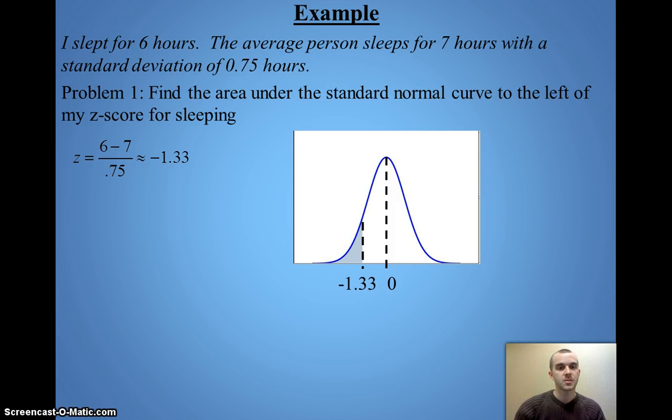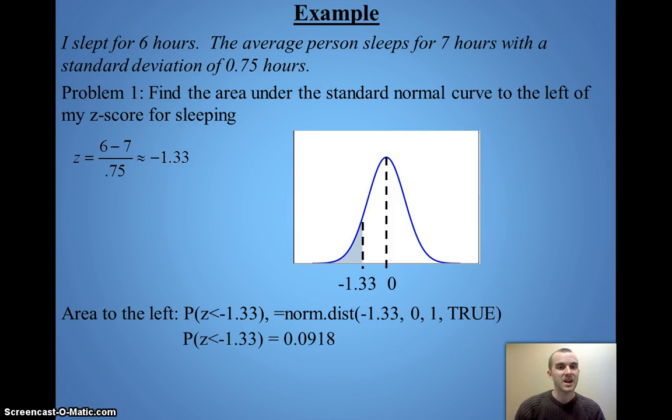If I shade to the left, my probability of z is less than negative 1.33, so I just use the formula from Excel. I'll plug everything in, and I'll get about 9%, or 0.09. So, I know about 9% of the data, or of the area, is to the left of z equals negative 1.33.